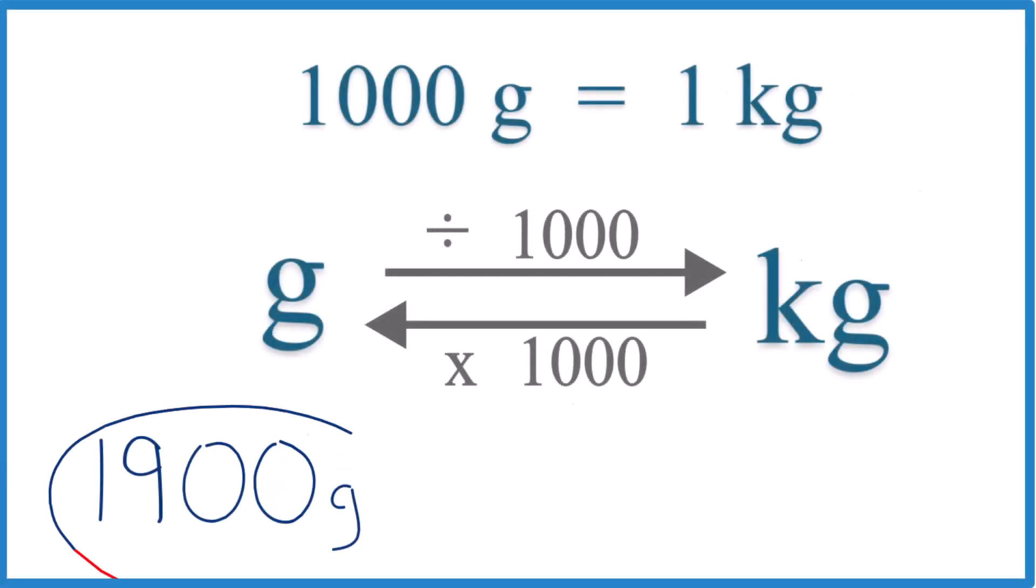If you need to convert 1,900 grams to kilograms, here's how you do it. First off, you need to know there are 1,000 grams in one kilogram. This is our conversion factor, and you need it when you're converting from grams to kilograms or kilograms to grams.